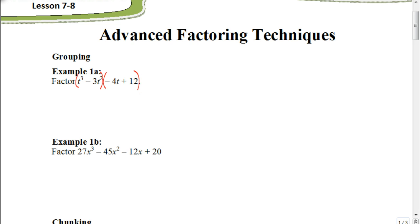It's very important that you include the symbol with the third term — whether it's a plus or a minus, it's very critical that you do that. So let's start with the first two terms and look for the greatest common factor. The greatest common factor between t cubed and 3t squared is t squared, and when I factor that out, I'm left with t minus 3.